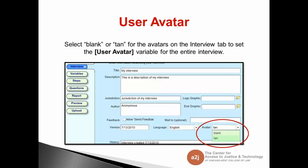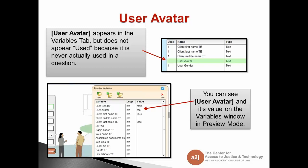Selecting tan or blank sets the skin color for both avatars for the entire interview. If you don't choose, A to J Author defaults to blank. The user avatar program variable appears in the variable tab but shows up as used zero because it's never actually used in a question. Don't delete this variable when you're cleaning up — a lot of people delete all unused variables, but this one is used in the interview running in the background.